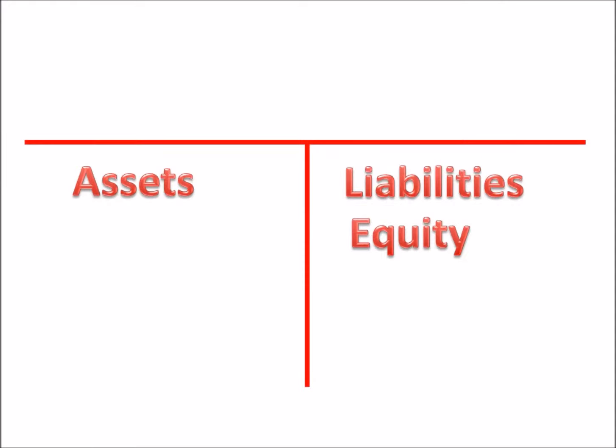Let's put a T-account over the top of that. We have debit on the left side and credit on the right side. If we increase assets, we debit them. If we decrease assets, we do the opposite, so we credit assets. We therefore expect assets to normally have a debit balance.